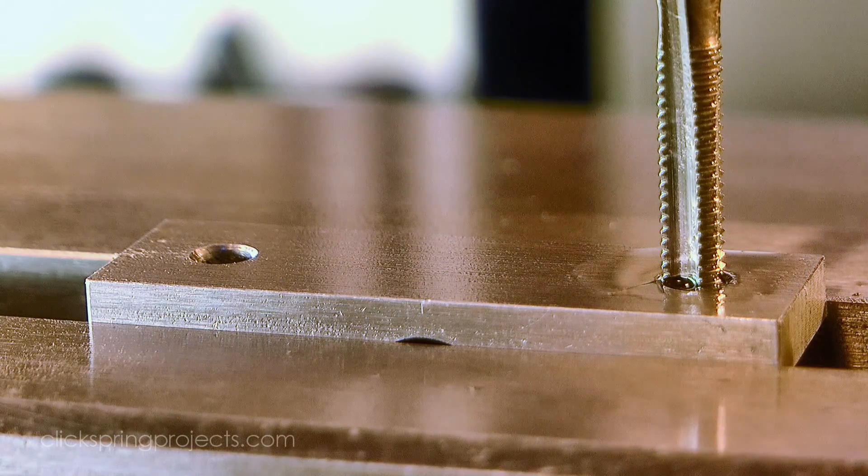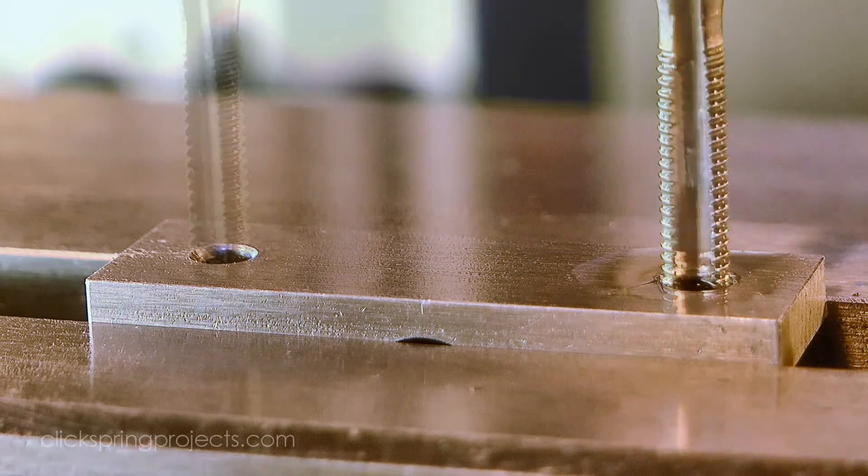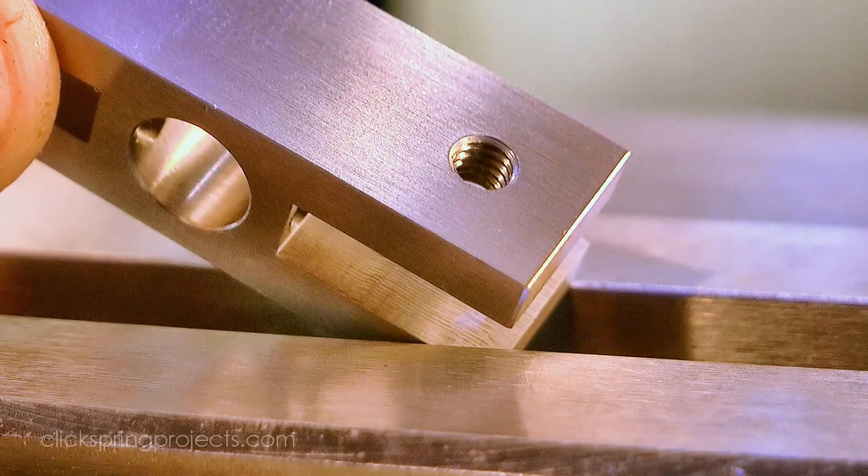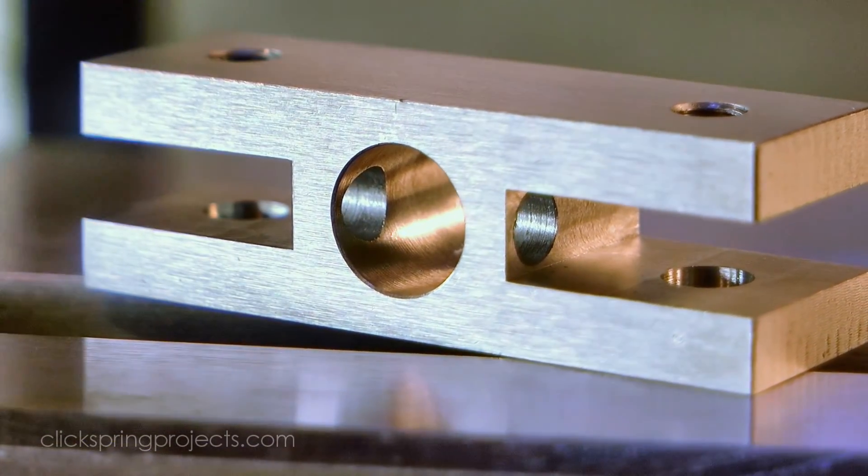The holes for the pivots were then relocated, and the thread tapped. So that's the pivot block complete, and ready to be pressed onto the threaded insert.